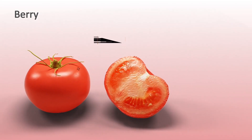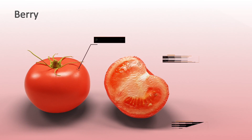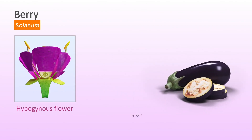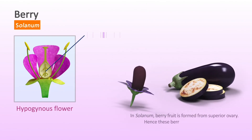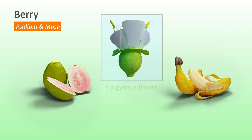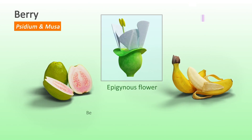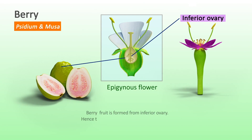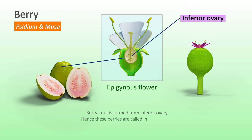In berry fruit, pulp is formed by layers of pericarp, mostly by mesocarp and endocarp. In Solanum, berry fruit is formed from a superior ovary, hence these berries are called superior berries. In Citium and Musa, berry fruit is formed from an inferior ovary, hence these berries are called inferior berries.